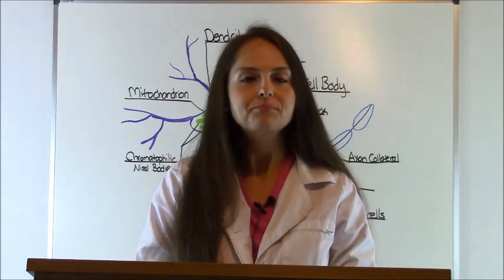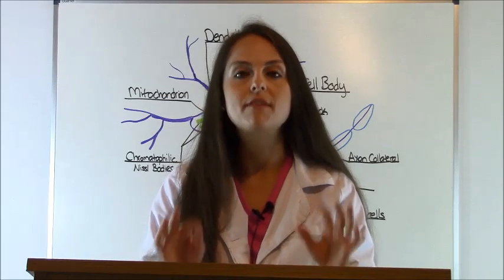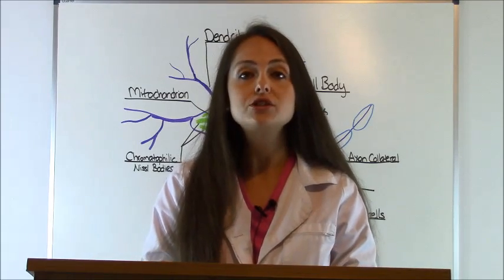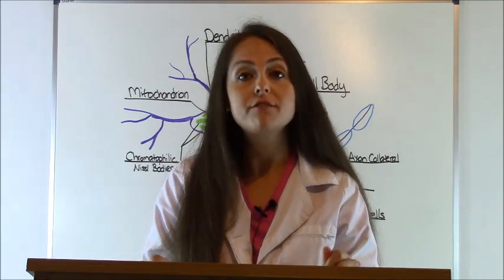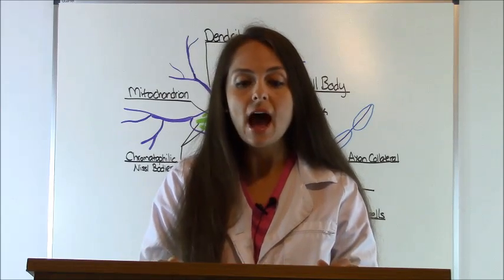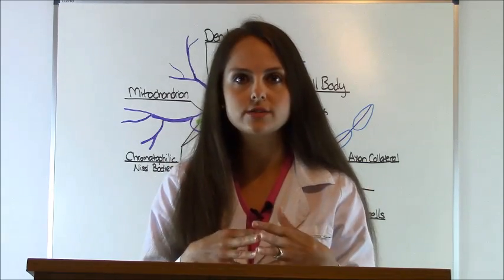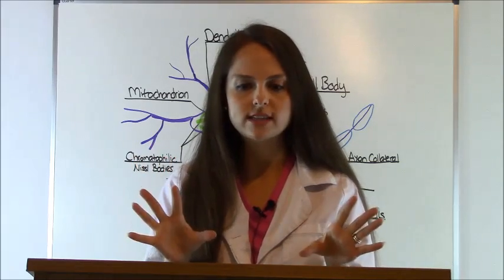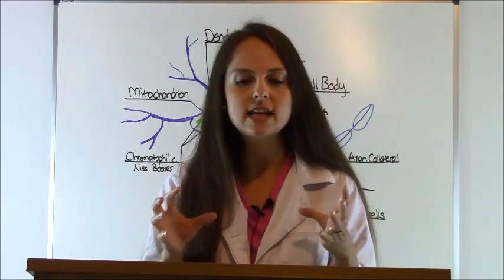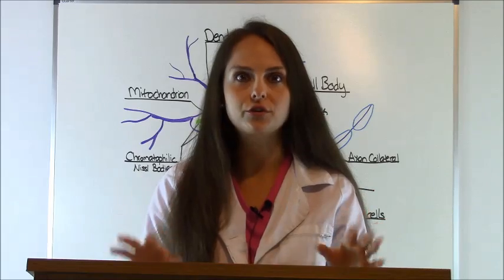So let's get started. The nervous system is made up of nervous tissue. There's two types of nervous tissue. The first type are called neurons. These are excitable nerve cells that transmit electrical signals. The second type are support cells. These are non-excitable cells that wrap around and surround the neuron.